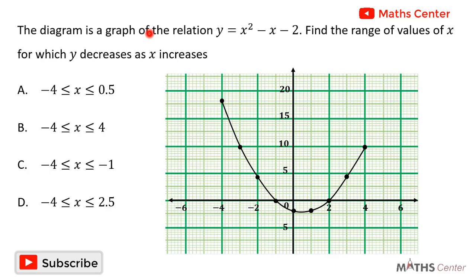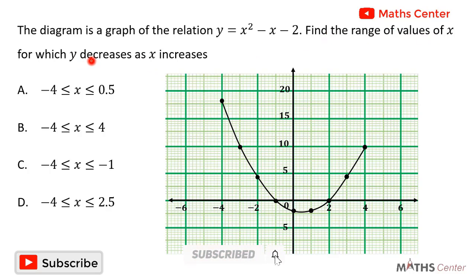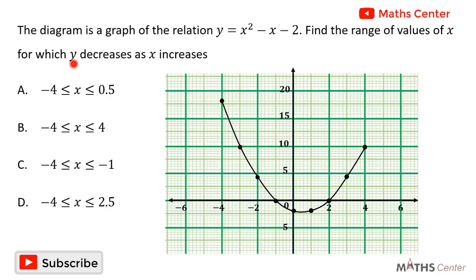The diagram is a graph of the relation y is equal to x squared minus x minus 2. Find the range of values of x for which y decreases as x increases. This is a multiple choice question, so we will solve the question and after that we will pick the correct option.